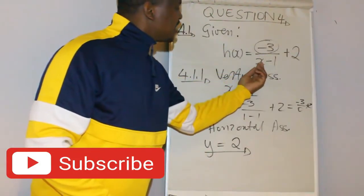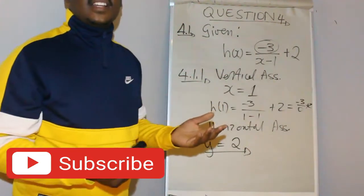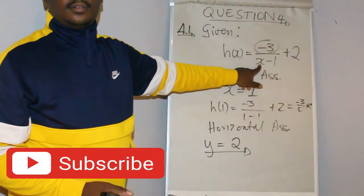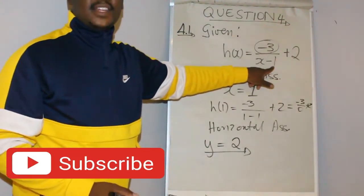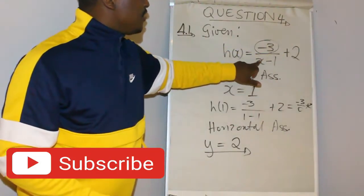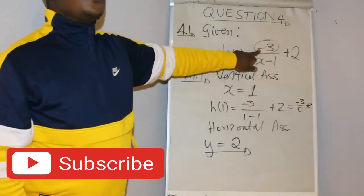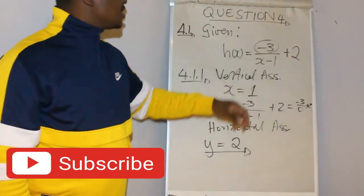But if you have something like 1 minus x, then you must rearrange that in such a way that it fits this format: x minus something, x plus something. So if everything else stays similar to this, let's say you have x minus p plus q, then this is where you read the sign of your graph.